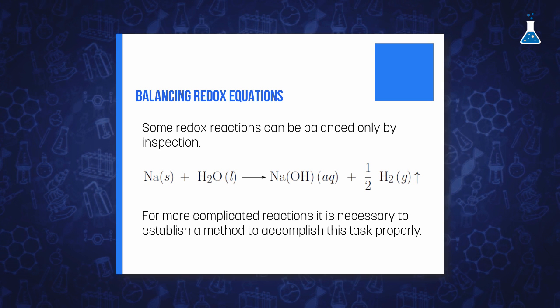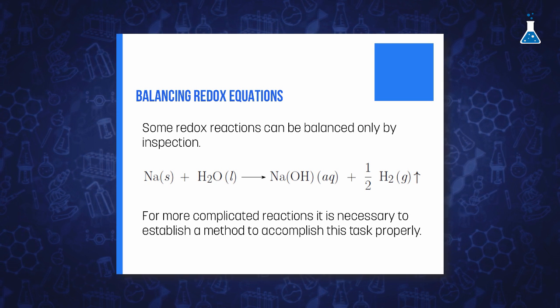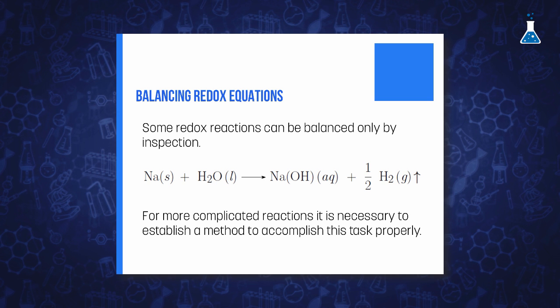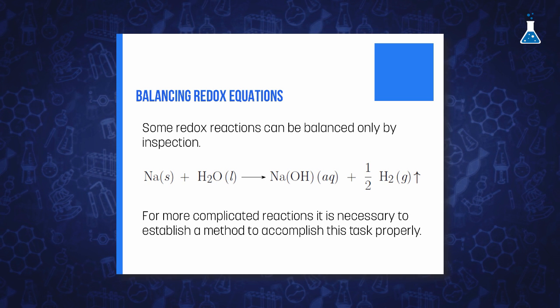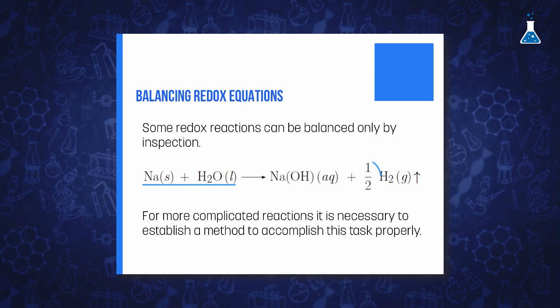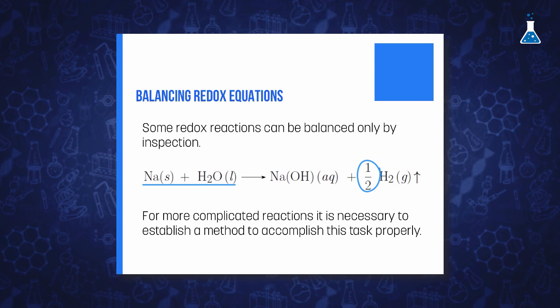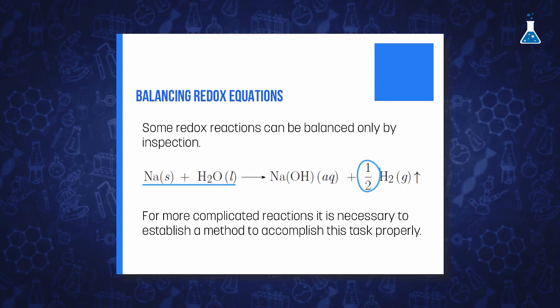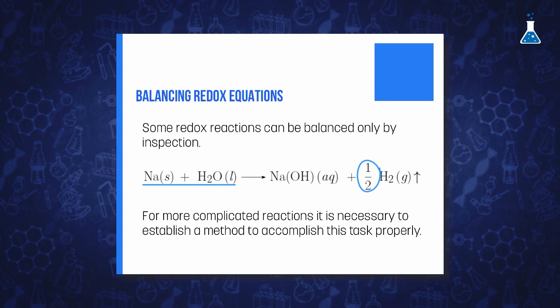Balancing redox equations can be an easy task that could be done only by inspection. For example, for the following reaction of sodium with water, we only need to write a half in front of the molecule of hydrogen in order to have the same amount of atoms in both sides of the equation.